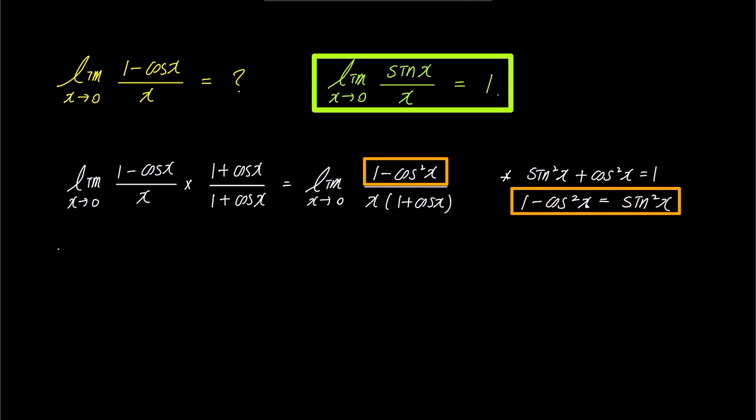Substituting this into the numerator of the limit expression, we get sine squared x and the denominator remains x times 1 plus cosine x. If we express the numerator sine squared x as the product of two sines, then the numerator of the limit becomes sine x times sine x, and the denominator remains x times 1 plus cosine x.